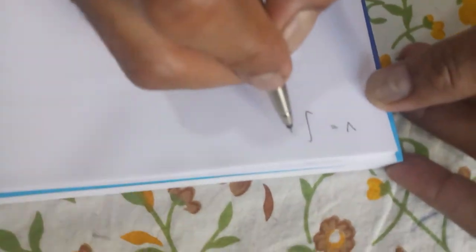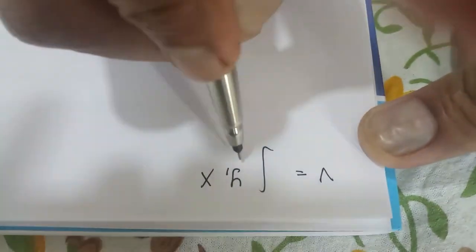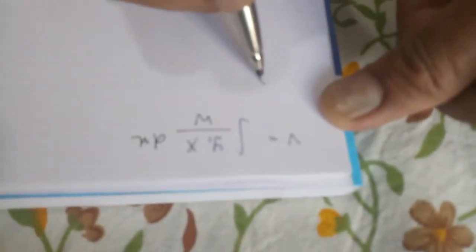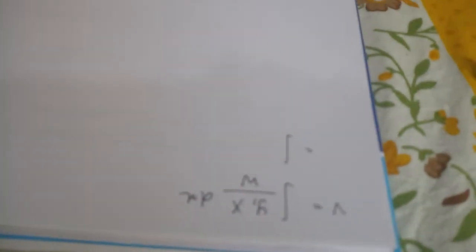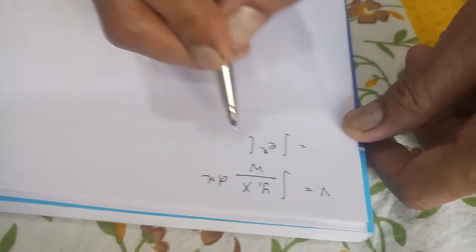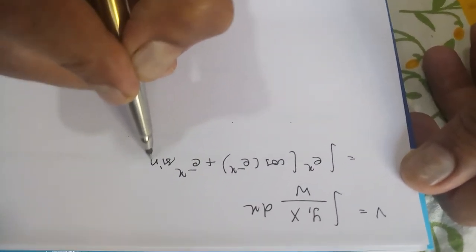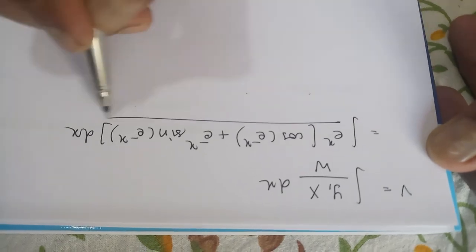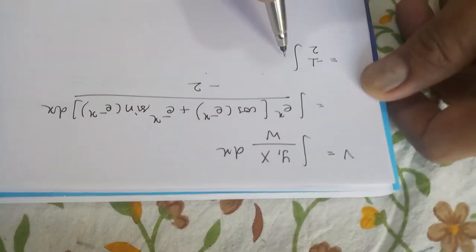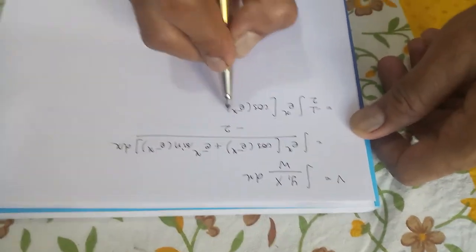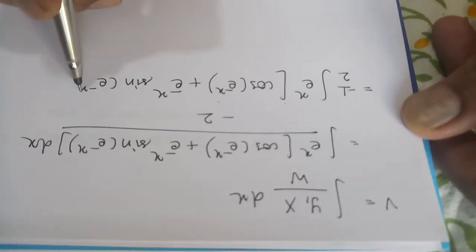Let that be equation number 2. Now to find the value of v, v is given by the formula: v equals integration of y1 times capital X upon W dx. Here y1 was e raised to x, and capital X was cos of e raised to minus x plus e raised to minus x sin of e raised to minus x, dx upon W which is minus 2. Taking minus 1 by 2 out, we get the integration of e raised to x into cos of e raised to minus x plus e raised to minus x sin of e raised to minus x dx.